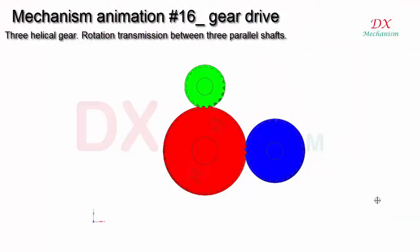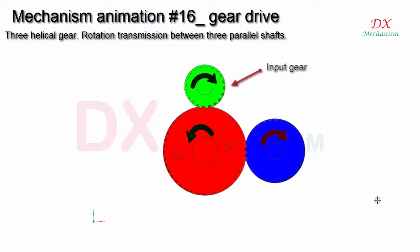Mechanism animation number 16: three helical gear rotation transmission between three parallel shafts. Input gear and output gear.